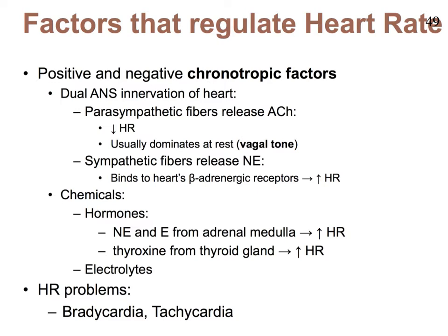Acetylcholine released by the parasympathetic nervous system can be thought of as a negative chronotropic factor. Norepinephrine, on the other hand, is a positive chronotropic factor. There are also other chemicals, including hormones and electrolytes, that can impact heart rate. Norepinephrine can act as a hormone via the adrenal medulla, and the thyroid hormone thyroxine can also increase our heart rate.